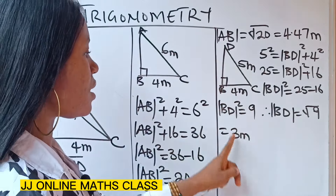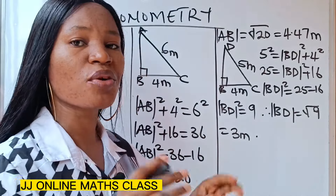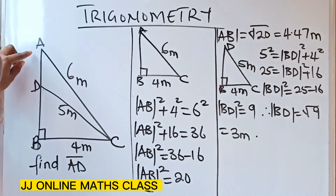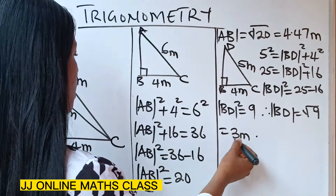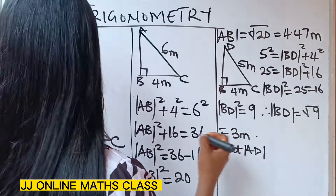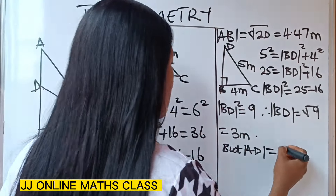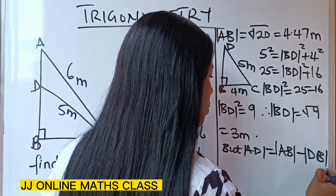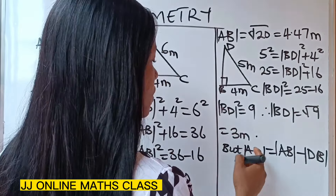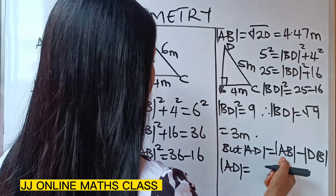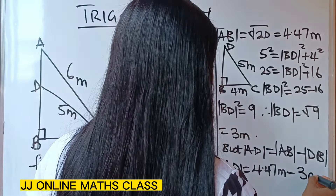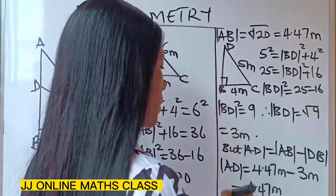Therefore BD equals the square root of 9, which gives us 3 meters. Now remember, what we are actually looking for is AD. We can get AD by subtracting DB from AB. So line AD equals line AB minus line DB — that is 4.47 meters minus 3 meters — which gives us 1.47 meters.